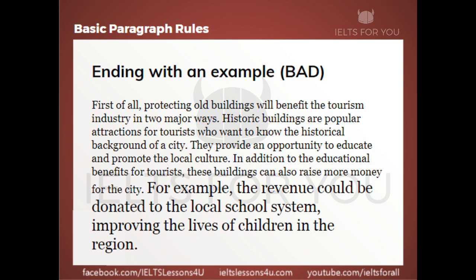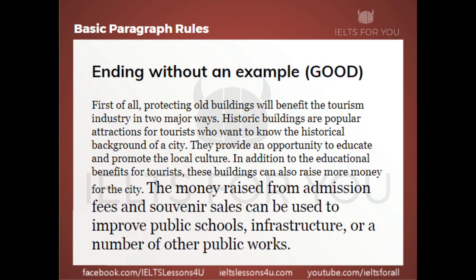Let's look at the problem of ending with an example. Read the last sentence: 'For example, the revenue could be donated to the local school system, improving the lives of children in the region.' It's a weird way to end the paragraph — this very specific example of donating money to a local school system is a good example, it just shouldn't come at the end. A better way to close is: 'The money raised from admission fees and souvenir sales can be used to improve public schools, infrastructure, or a number of other public works.' We're being specific, but not too specific. We're giving a list of ways rather than focusing on just one. A specific example can be used, but it shouldn't be in the very last sentence of the paragraph.